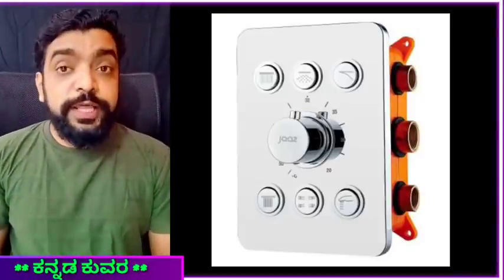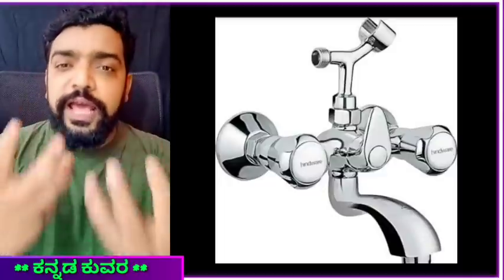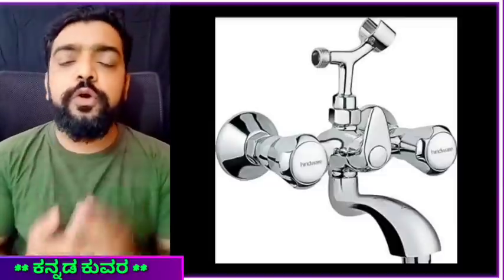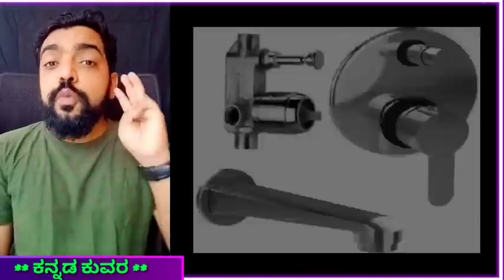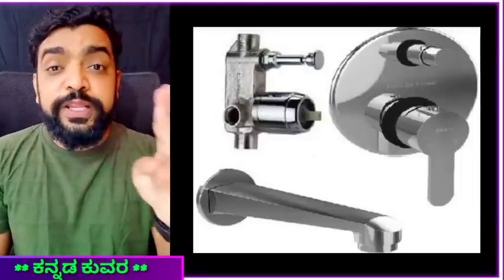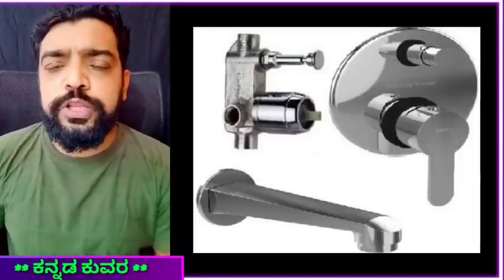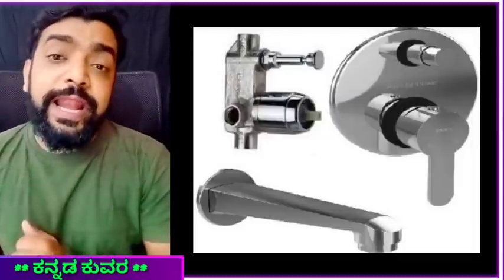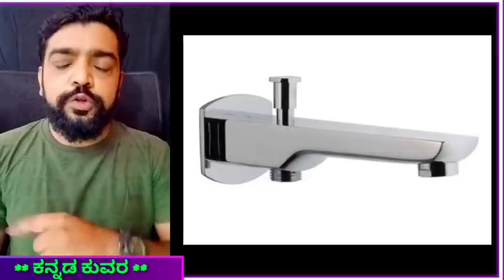The first consideration is the look — the wall mixer has a traditional look while the diverter has a modern look. The other consideration is the body. The diverter has three parts: one is the concealed part, and you can also add a spout to the operator. If you add a hand shower or a spout, you can add an additional way outlet.